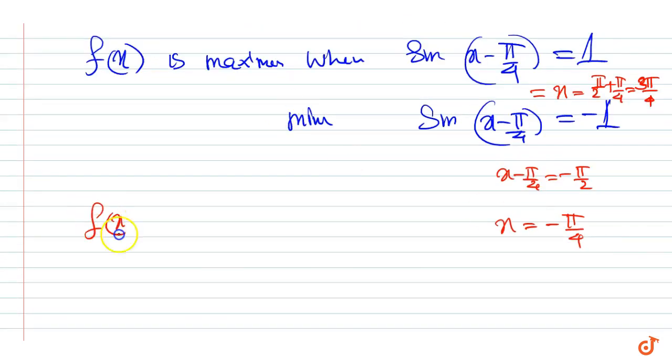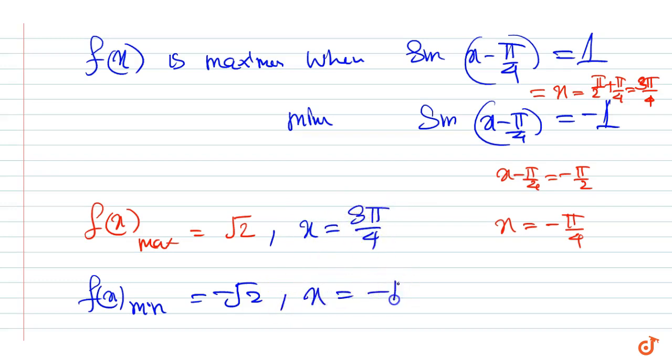f(x) maximum equals root 2 and f(x) minimum equals minus root 2. The local maximum occurs at x = 3π/4 and the local minimum occurs at x = -π/4.